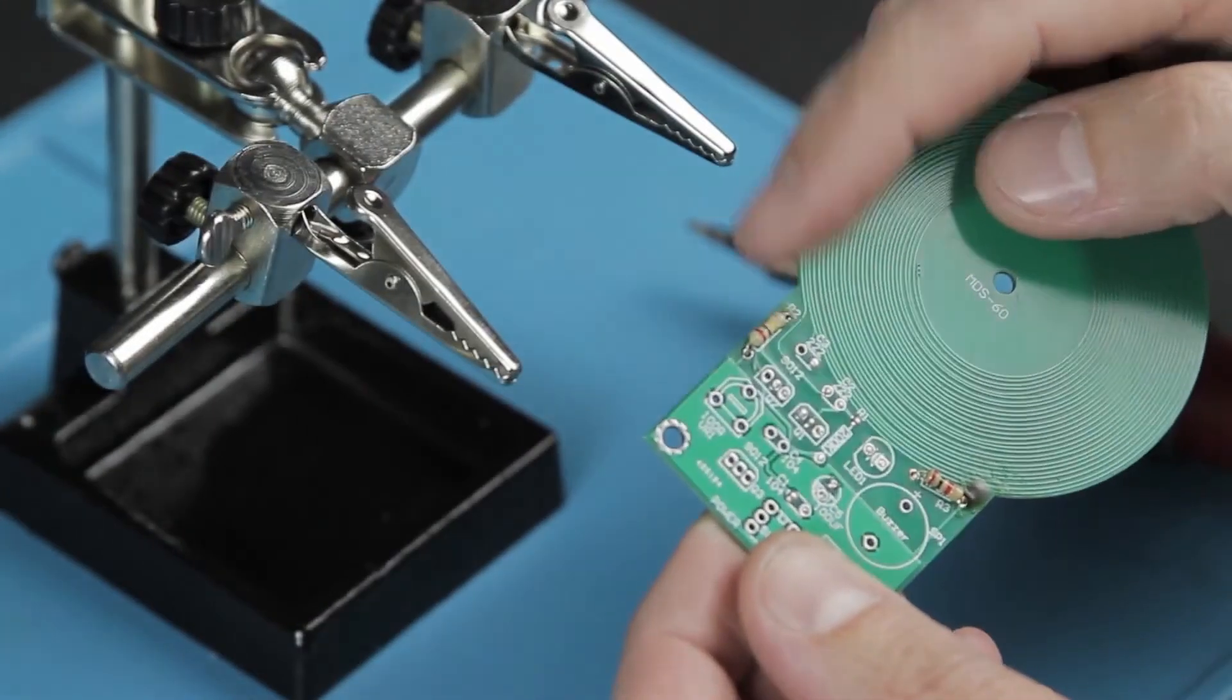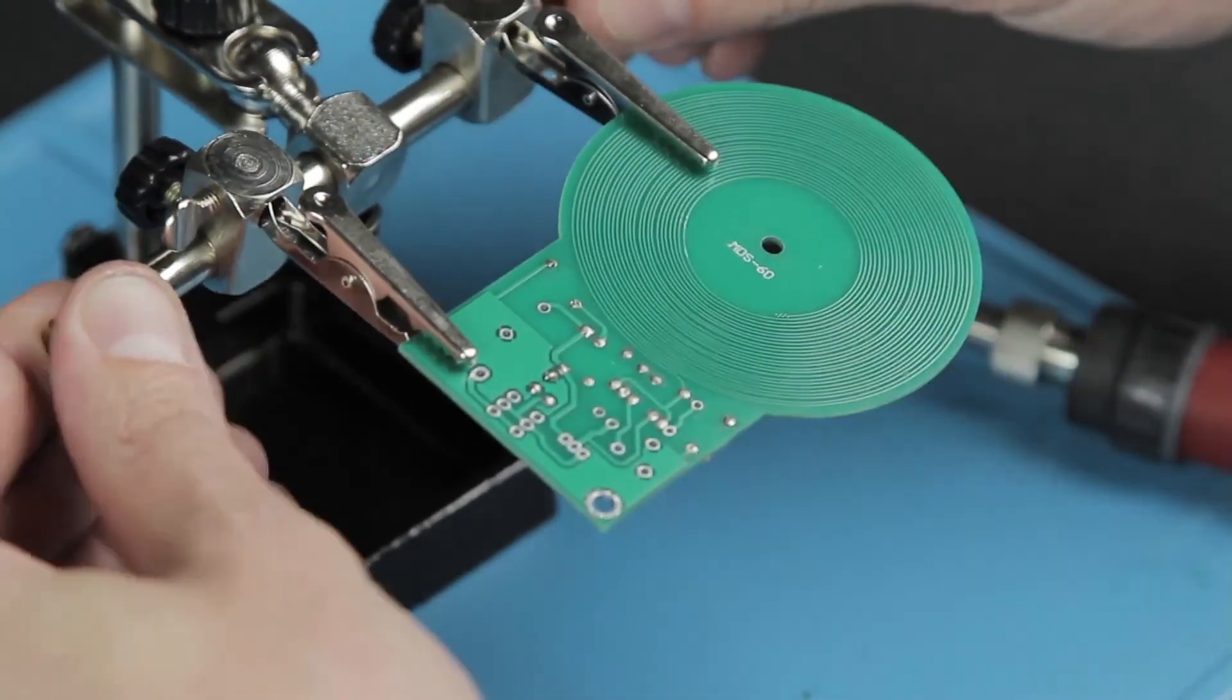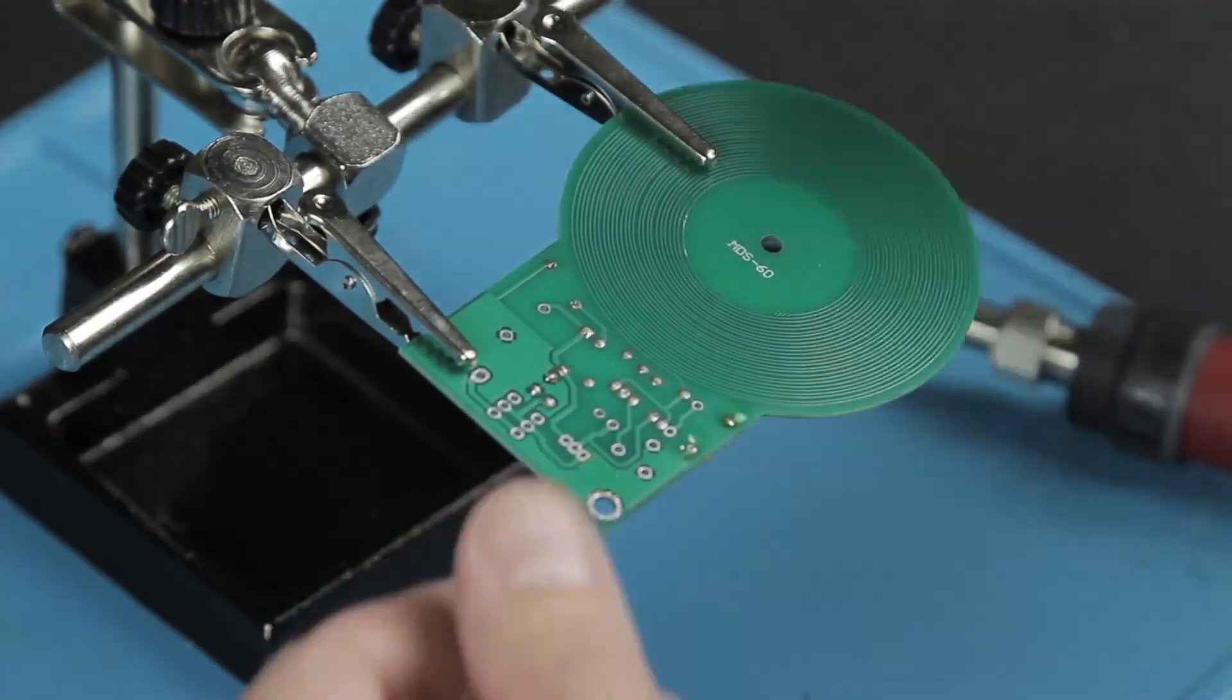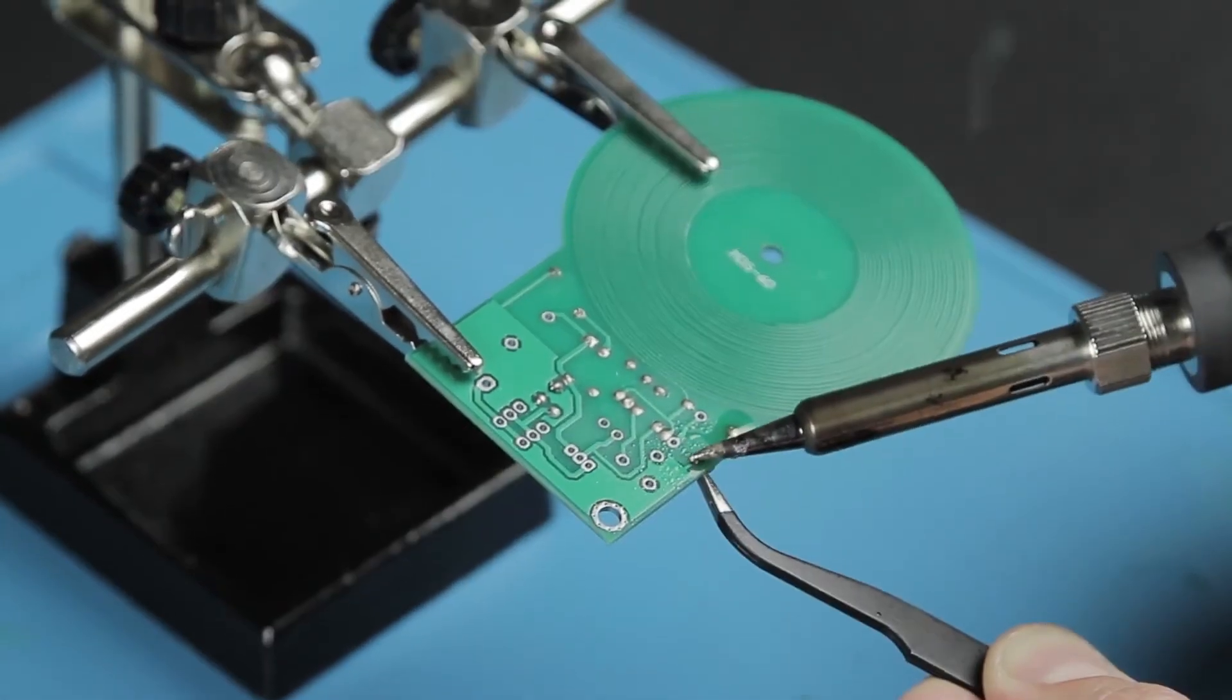To unsolder a resistor, we fix the board to the holder, apply flux, and, holding the resistor with tweezers, warm up both of its leads in turn, and then remove the resistor.